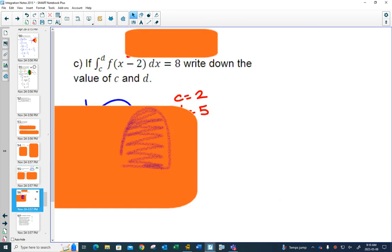And finally, what would happen if you did this? So we knew that originally the graph from 0 to 3 was 8, and now we want to find c and d so that this is also equal to 8. And thinking back to our transformations, that f(x-2) is just moving your graph 2 units to the right.